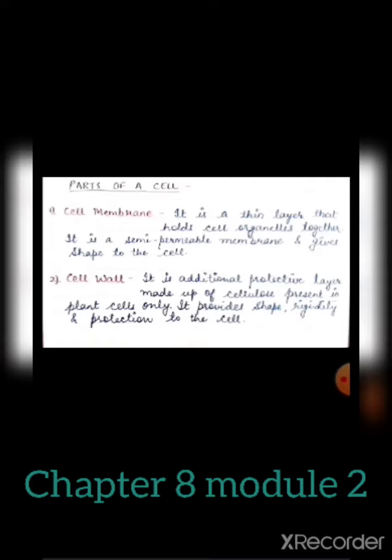The cell membrane gives shape to the cell and also acts as a protective layer. Second is cell wall — it is an additional protective layer made up of cellulose, present in plant cells only. It provides shape, rigidity, and protection to the cell.